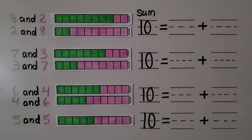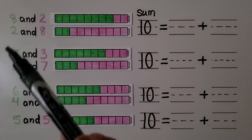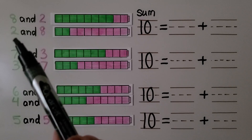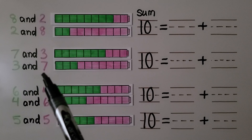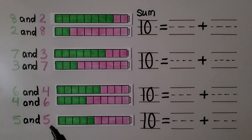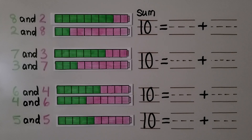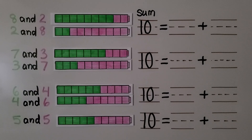We saw that the pair nine and one make ten when added together. We can also use the number pairs eight and two, or two and eight; seven and three, or three and seven; six and four, or four and six; and five and five. The order of the pair doesn't matter because they will still equal ten when added together.